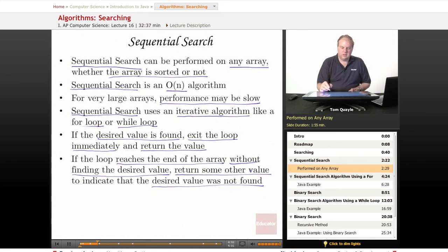For example, if the array contains positive integers, you may decide to return a value of negative one to indicate that the value was not found. If the array contains strings, then you may have some special purpose string that is used only to indicate that the string you're looking for was not found.